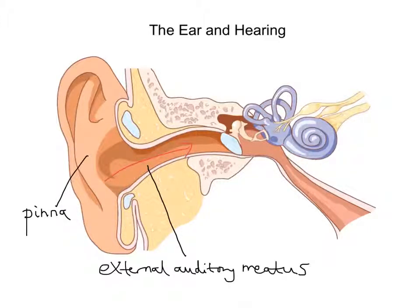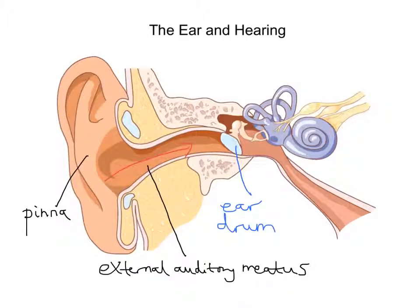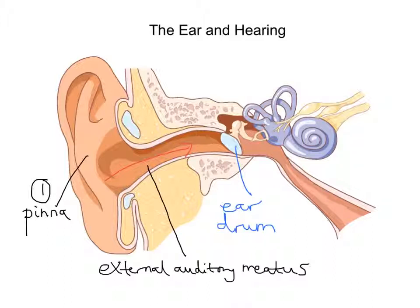The eardrum is vibrated by air pressure changes due to the sound waves. The eardrum is this part here, also known as the tympanic membrane. So number one, the sound waves are collected by the pinna. Number two, we have them passing down the external auditory meatus to reach the eardrum, which then will vibrate because of those air pressure changes.